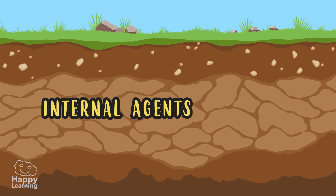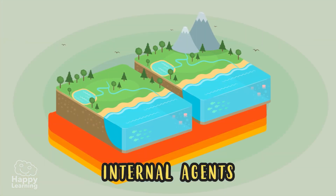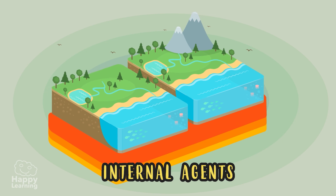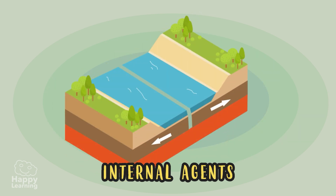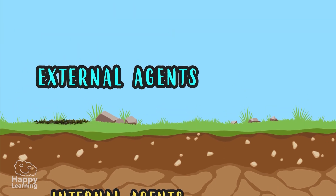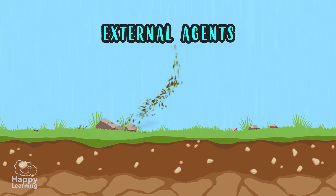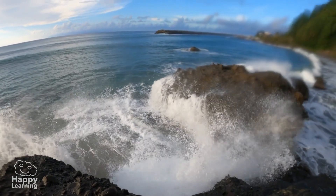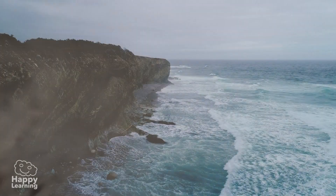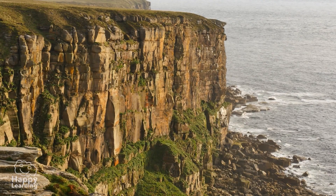The internal agents are the movements that take place inside the Earth when tectonic plates move together and separate, modifying the Earth's crust. And the external agents, on the other hand, can be rain, wind, or waves that crash, wearing down and even remodeling the land — until they create these huge cliffs!